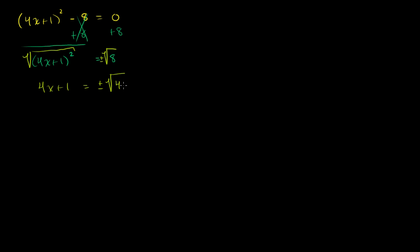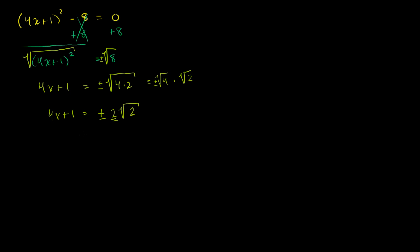Instead of 8, let me write 8 as 4 times 2. The square root of 4x plus 1 squared is 4x plus 1. So we get 4x plus 1 is equal to — we can factor out the square root of 4, which is 2 — equal to plus or minus 2 times the square root of 2. Square root of 4 times square root of 2 is the same as square root of 4 times the square root of 2, and plus or minus square root of 4 is that 2.